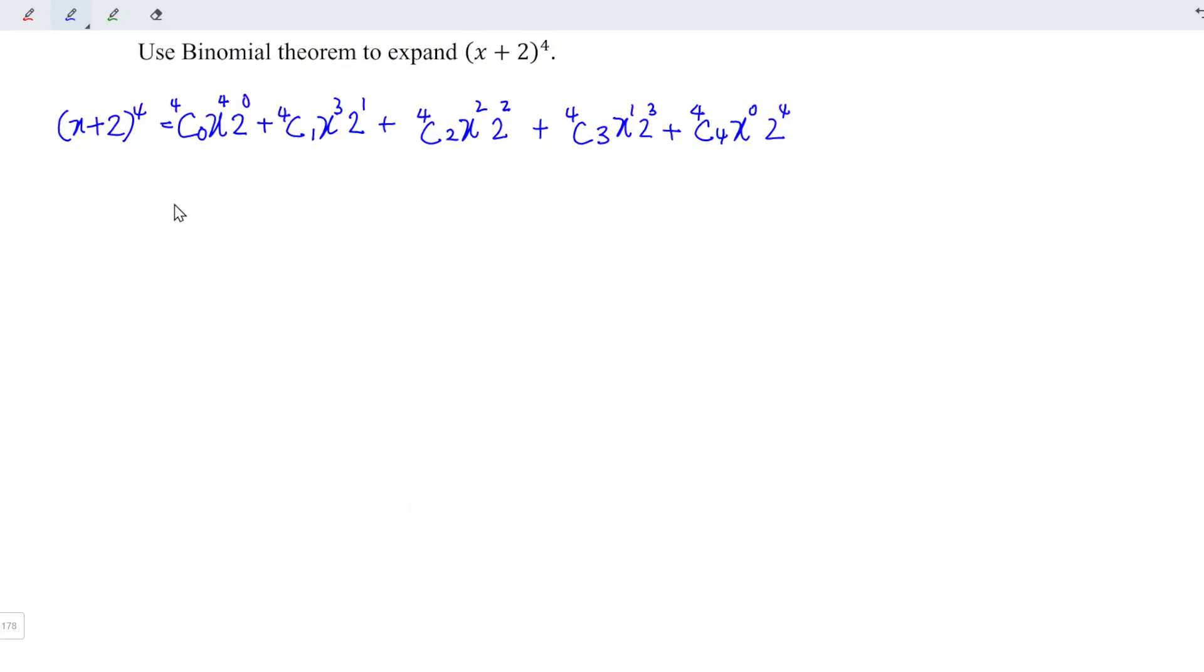So this is equal to 4C0 is equal to 1 times x to power 4 times 2 power 0 is 1. And we plus 4C1 is 4 times x to power 3 times 2.